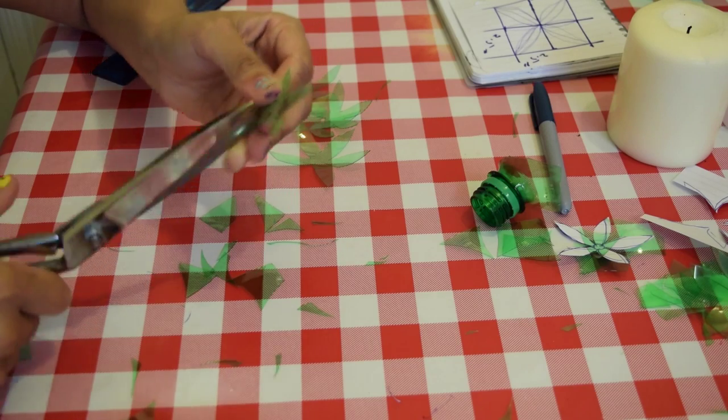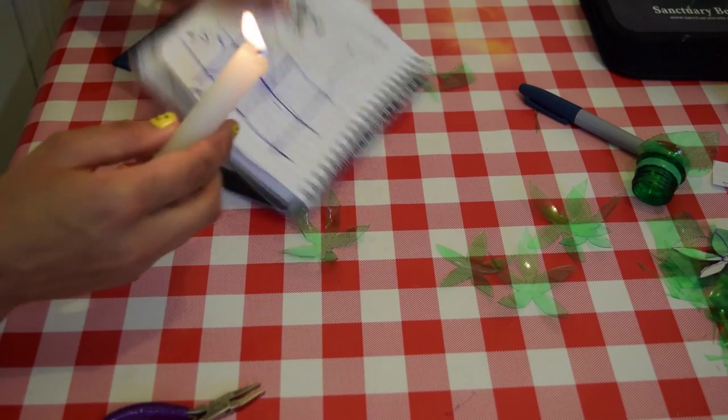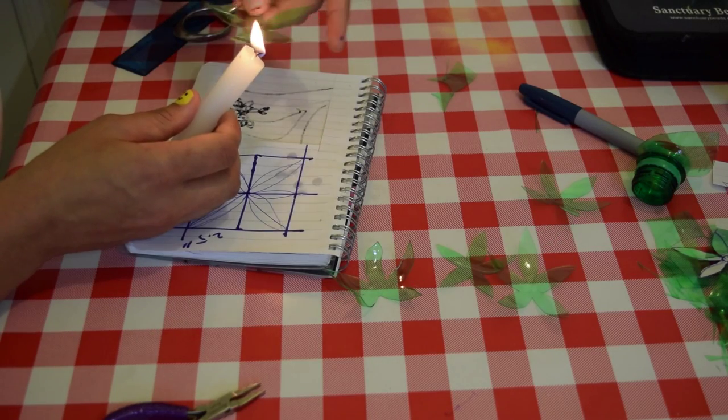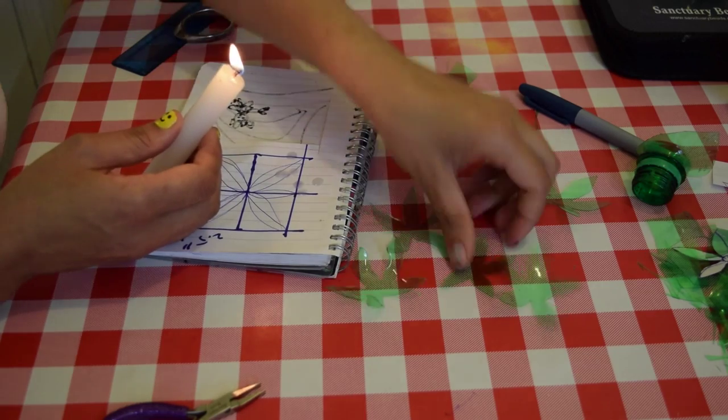Next step is to melt the edges. For this, you can use a lighter, but I'm preparing this candle as it's easier for me. Melt the sharp edges of all the petals one by one.